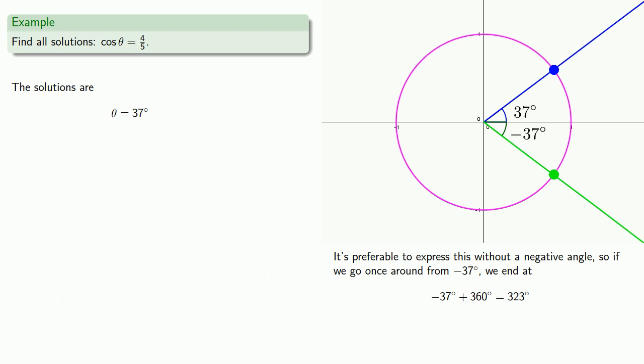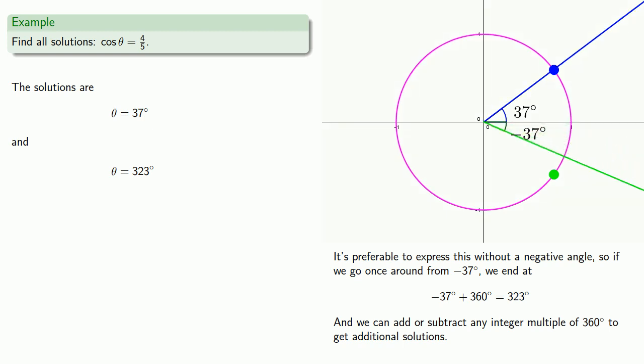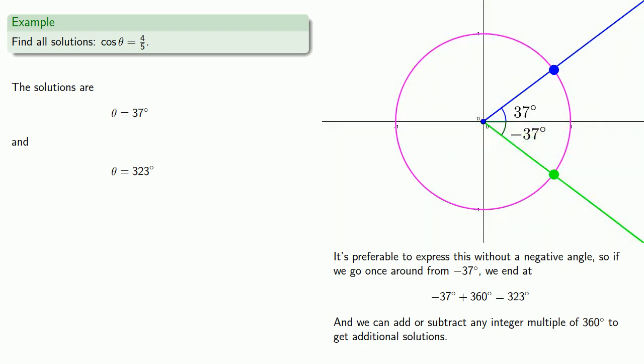But wait, there's still more. We can add or subtract any integer multiple of 360 degrees to get additional solutions. And that's because after we've rotated 37 degrees, if we make a full rotation after that, our cosine is still the same. Likewise, if we get to 323 degrees, if we make full rotations after that, we still have the same cosine. And so all solutions are going to be expressed as 37 degrees plus or minus any multiple of 360 degrees and 323 degrees plus or minus any multiple of 360 degrees.